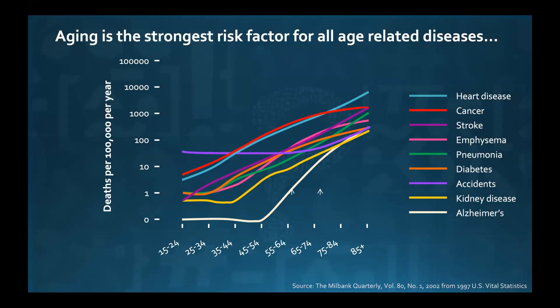This is where we started with this graph that shows you the relationship between death on the y-axis and age, from a variety of age-related diseases. You can see, for example, with this blue line for heart disease — heart disease is rare in young people, and it goes from about 5 to 5,000 as we age. That's why aging is really the major risk factor for heart disease. You can say, just a minute — cholesterol — we thought it's cholesterol. Well, cholesterol is a threefold risk for heart disease, but aging is the major risk.